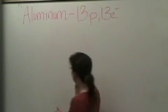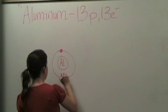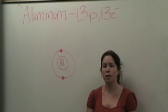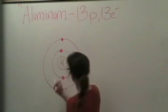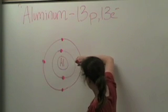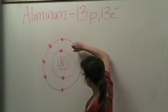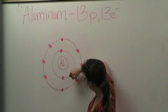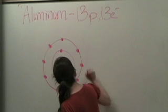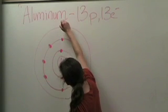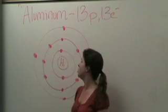We're going to start the exact same way — make my symbol and draw my first shell. I'm going to put two electrons in my first shell, and then I'm going to draw my second shell. Electrons three, four, five, six, seven, eight, nine, and ten. But aluminum has 13 electrons, so I have to draw one more shell. Here's my third shell for aluminum, and I'm going to put three electrons in that third shell. And this would be a complete shell model for aluminum.